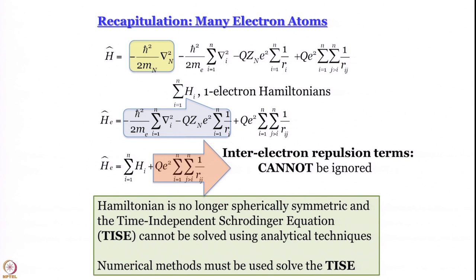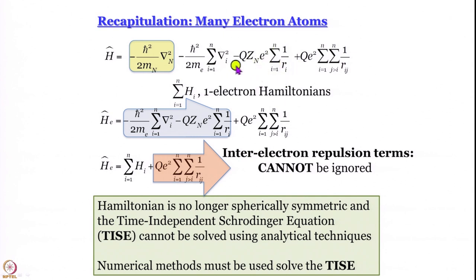We have learned that the way you write the Hamiltonian for a many-electron atom is that first you separate out the term for the kinetic energy of the nucleus or center of mass. What you are left with is a sum of n kinetic energy terms — one for each electron — and a sum of n nucleus-electron attraction terms. These turn out to be the one-electron Hamiltonians, and that is not a problem.